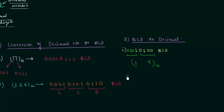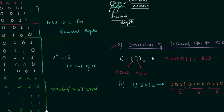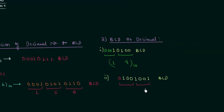In the second example, the BCD number is 1001001. Again, we make groups of 4 bits from the right. The first group is 1001, and the second group has 3 bits so we add one leading zero to get 0100. From the first group, 1001 is 9; from the second group, 0100 is 4. So the decimal number is 49.